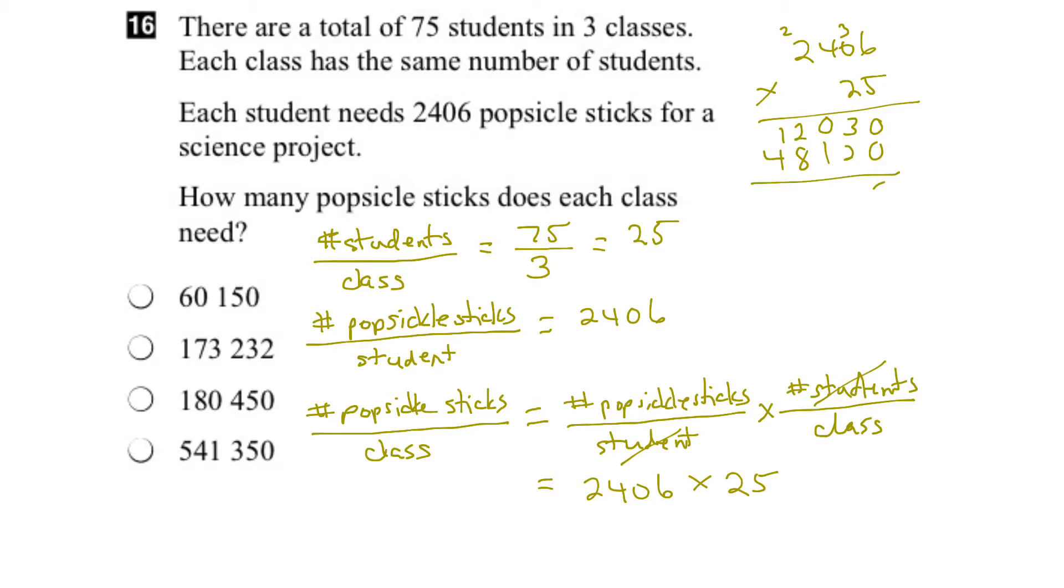So 0 plus 0 is 0. 3 plus 2 is 5. 1 plus 0 is 1. 8 plus 2 is 10, carry the 1. 4 plus 1 is 5, plus 1 is 6. So this equals 60,150.